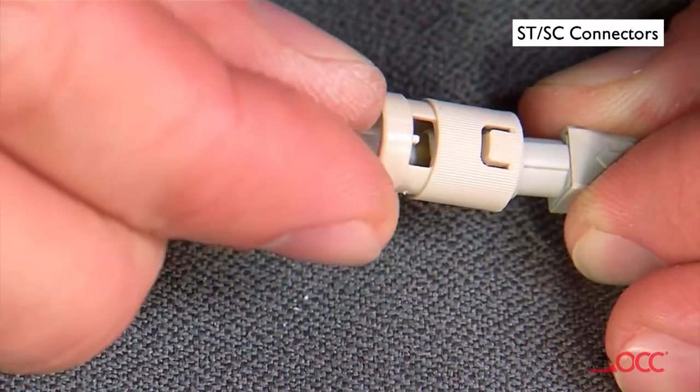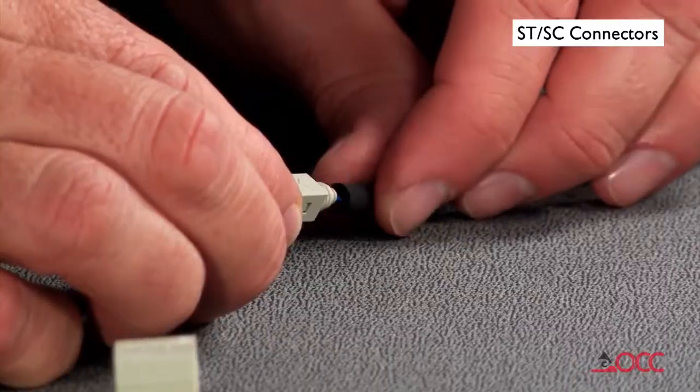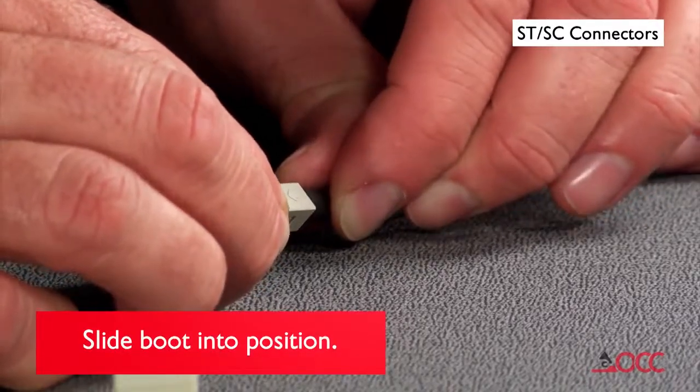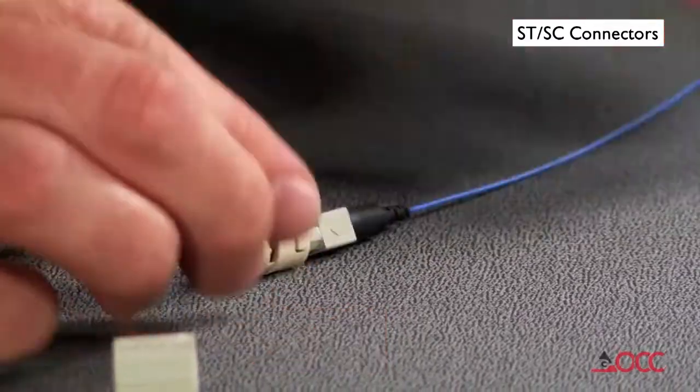Install the connector housing onto the connector. Reinstall the dust cap onto the connector's ferrule. Slide the boot up and over the rear of the connector body. Your termination is now complete.